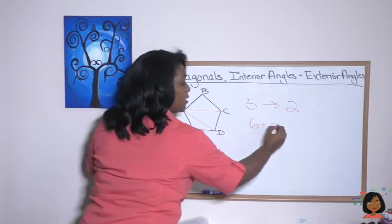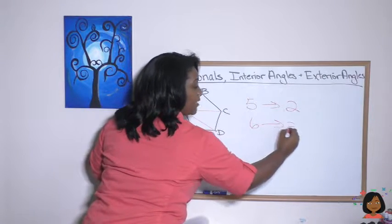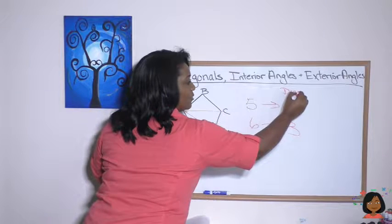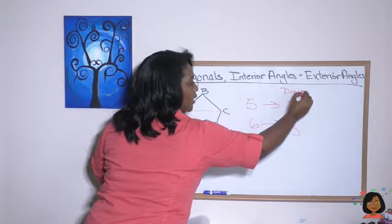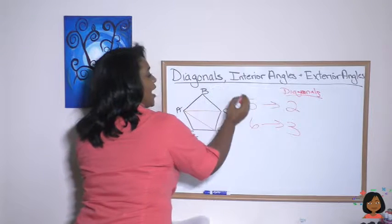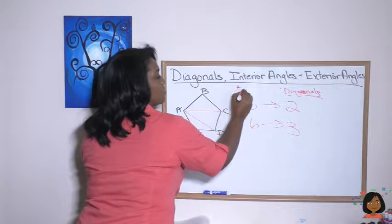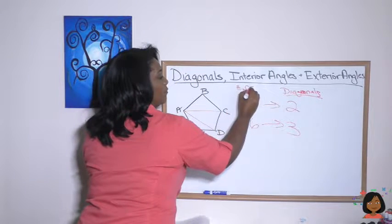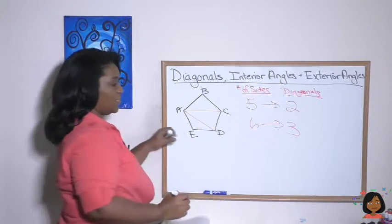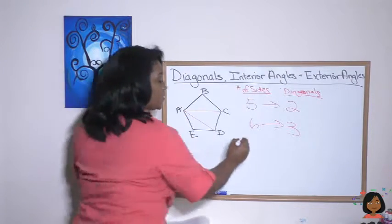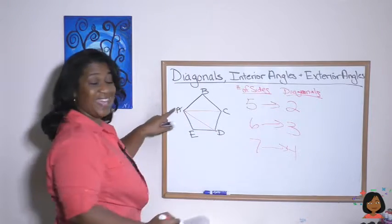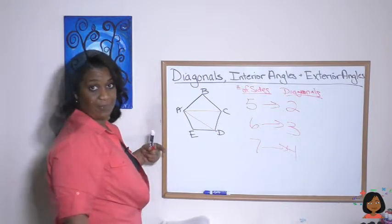In fact, for any polygon, no matter how many sides it has, you're never going to be able to use the point you're working on plus the ones on either side — so we always subtract three to find how many diagonals from one vertex. So for six sides it'd be three diagonals; for seven sides it would be four.